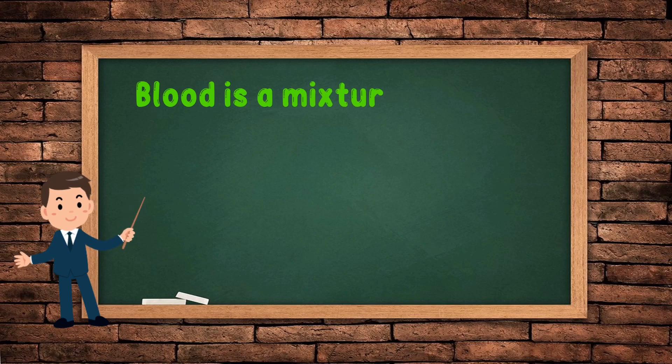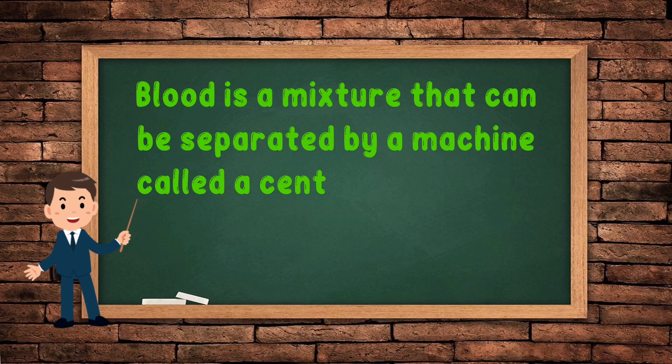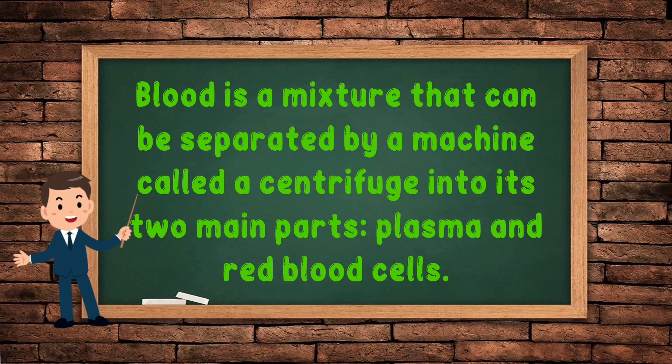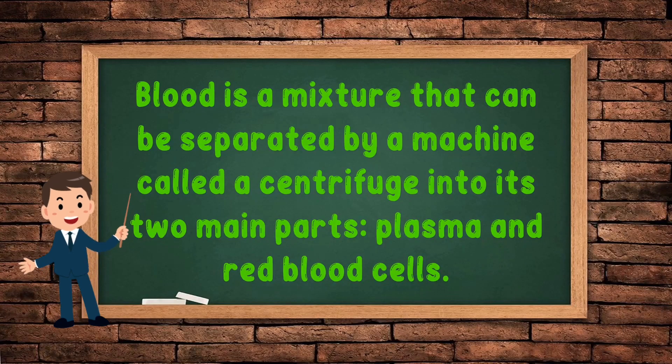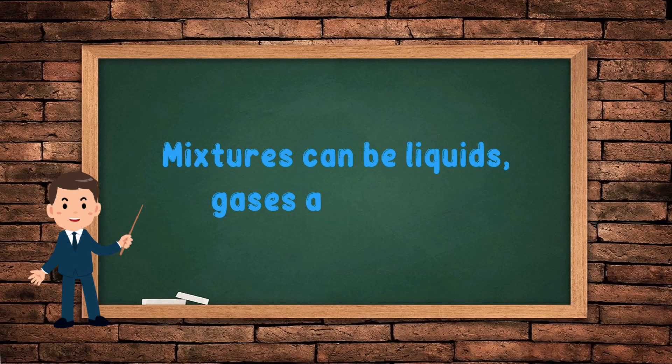Blood is a mixture that can be separated by a machine called a centrifuge into its two main parts: the plasma and the red blood cells. Mixtures can be liquids, gases, and solids.